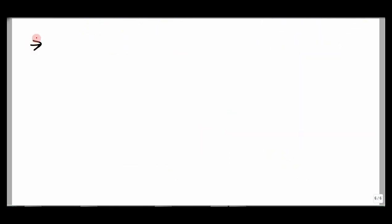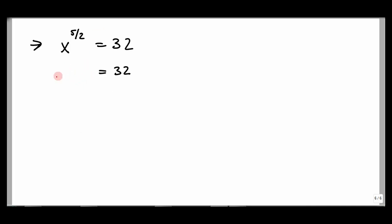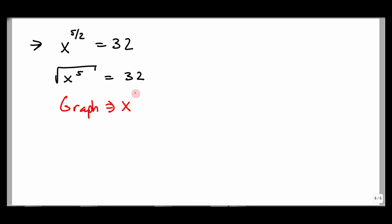Now let's look at problems where we're working with roots in exponential form. For instance, x to the 5/2 equals 32. This doesn't look like a radical problem, but remember: 5 is the power and 2 is the root, so this can be rewritten as the square root of x to the 5th equals 32. We can graph it either way — I'll use the exponent form. Set equal to 0: x^(5/2) − 32 = 0.